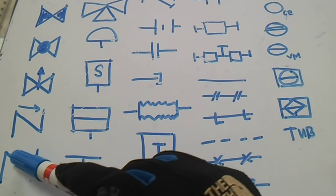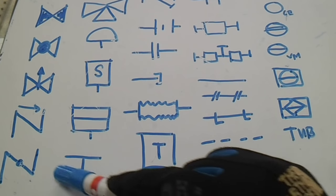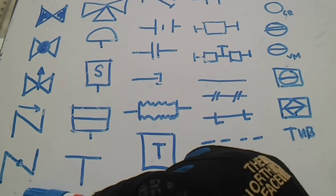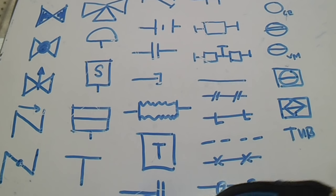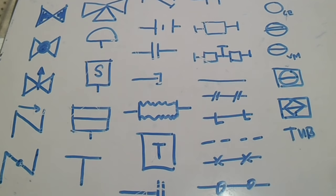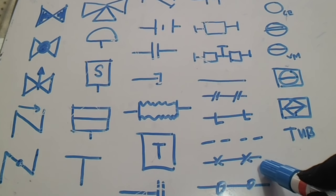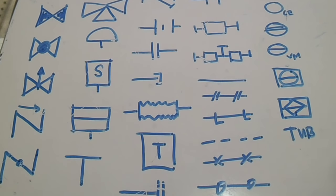This is a blind flange. We have a software data link, and this line is primary tubing. That covers all the symbols for the P&ID. Thanks for watching — have a nice day!